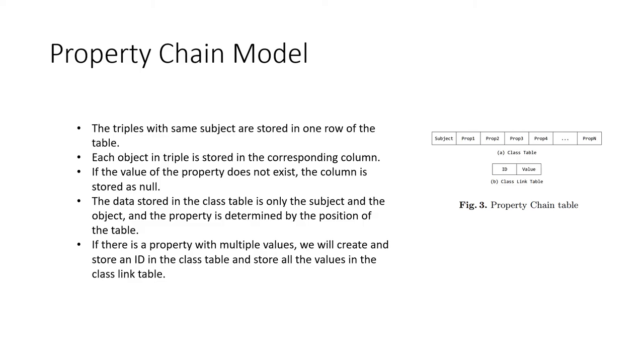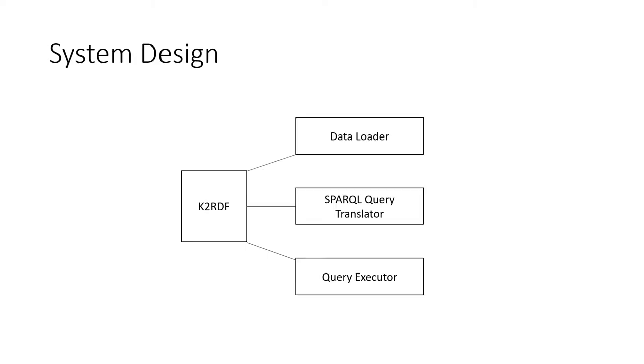For queries, the class table and the class link table can be joined on the ID if the property has multiple values. Based on the property chain model, we built K2 RDF on Kudu and Impala. The system consists of three parts: the data loader, the SPARQL Query Translator, and the Query Executor.